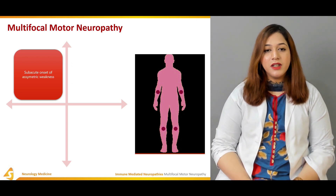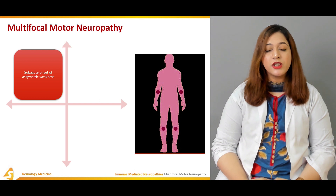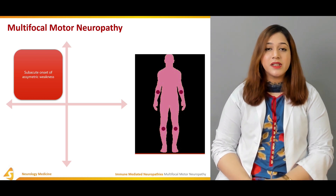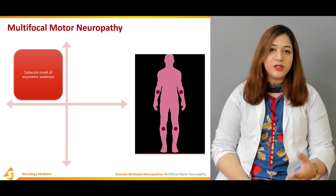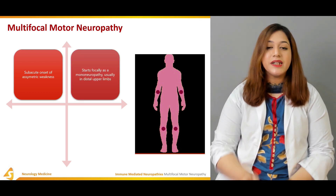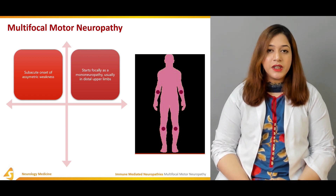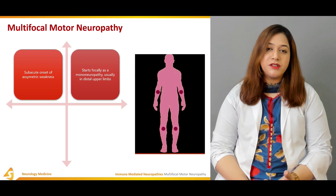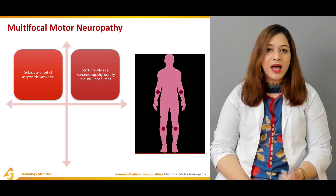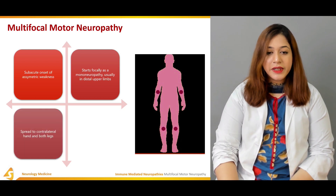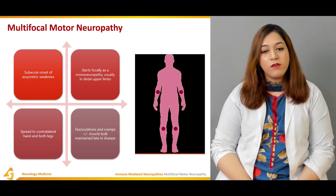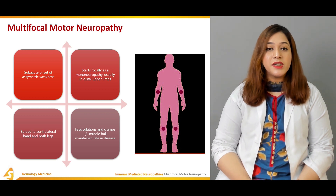Multifocal motor neuropathy is a slowly progressive disease often involving the upper limbs. It is an asymmetric weakness and is mostly subacute in onset. It starts focally as a mononeuropathy in the distal upper limbs, and the patient presents with difficulty in wrist and finger extension or reduced hand grip. It may spread to the contralateral hand and both legs, and patients sometimes complain of fasciculations and cramps, with or without normal muscle bulk maintained until late in the disease.